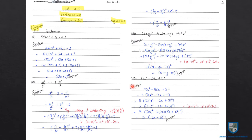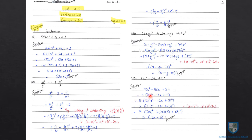Part number 4 of question number 3: 12X square minus 36X plus 27. तो solution देखें. अब यह हमारे पास जो तीनों constants हैं — यह तीनों constants 3 के multiple हैं. Means, इन तीनों का factor 3 है, तो हम इन तीनों में से 3 को common लेंगे. जब 12 में से 3 common जाएगा तो बचेगा 4X square, minus sign as it is, और जब 36 में से 3 common जाएगा तो बचेगा 12X, plus 27 में से 3 common जाएगा तो बचेगा 9.